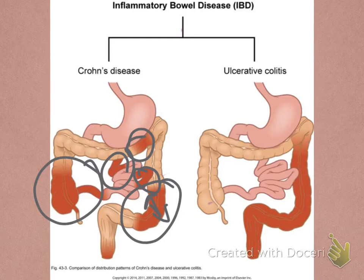Signs and symptoms for Crohn's disease include diarrhea, abdominal pain, and frequent bowel movements, depending on where in the intestinal tract it occurs. If it occurs higher in the intestinal tract and involves some of the small intestine, you can have more nutritional problems.